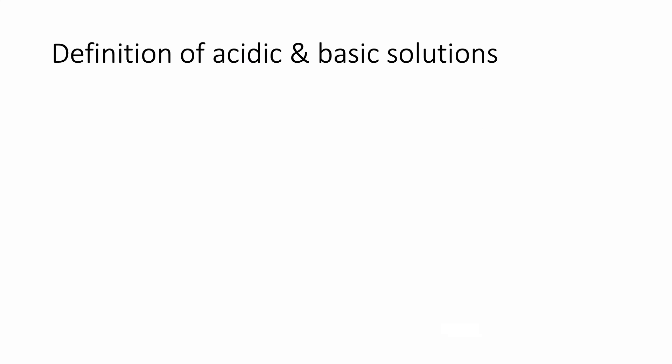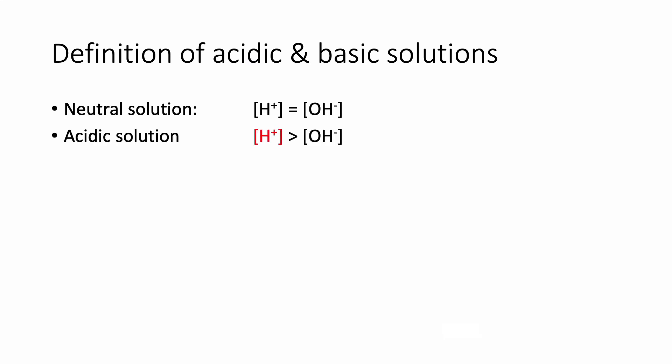You may have heard people talk about something being acidic or basic. What does that mean in terms of solutions where you have both H+ and OH- ions? A neutral solution has equal concentrations of H+ and OH- ions. In an acidic solution, we have more H+ than OH- ions — and even among acidic solutions, some will have more H+ than others, so we'll talk about acid strengths later. In a basic solution, the OH- concentration is greater than the H+ concentration.